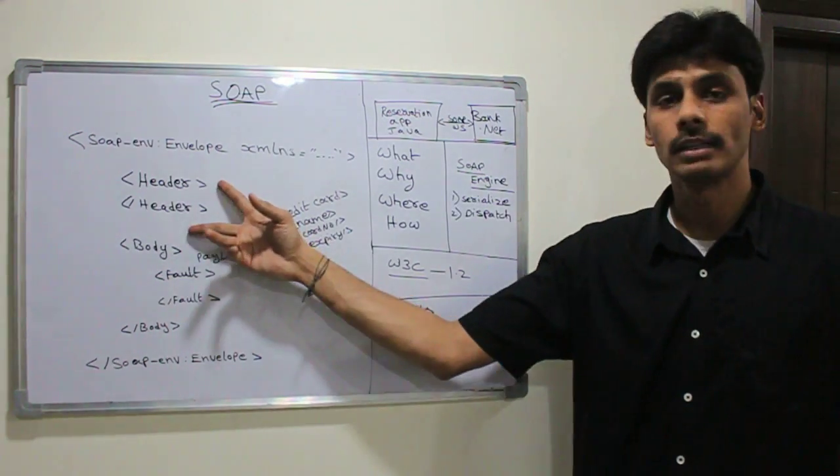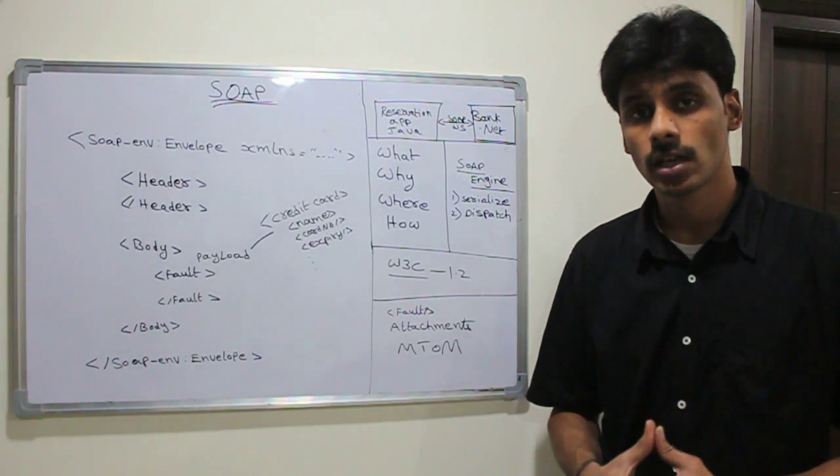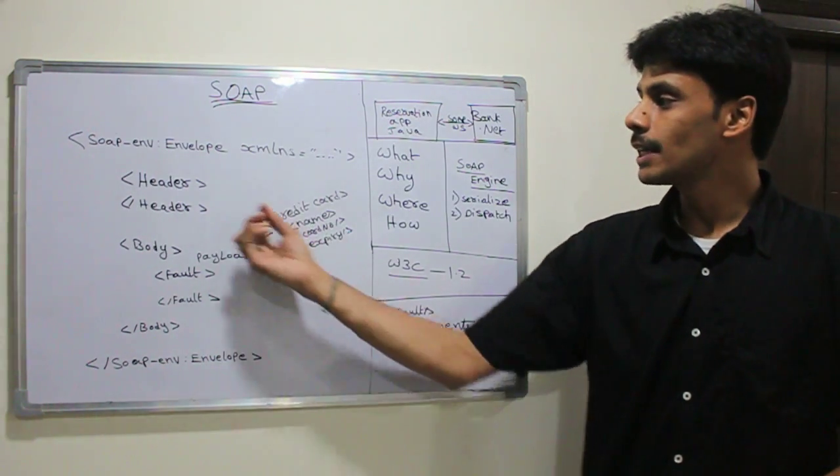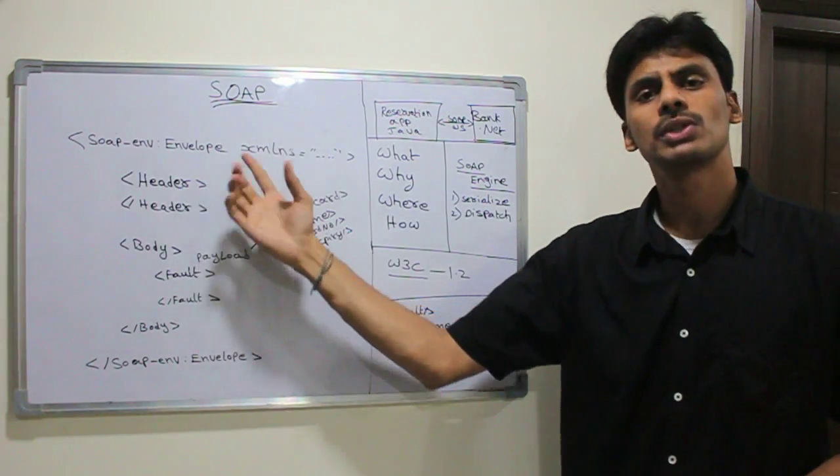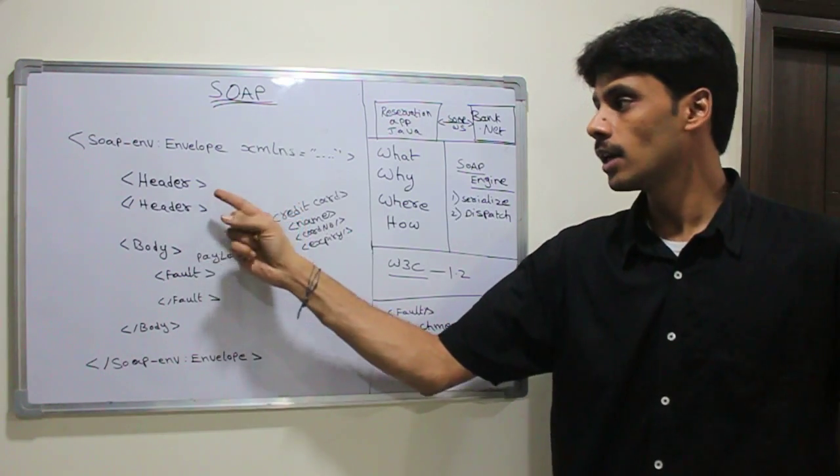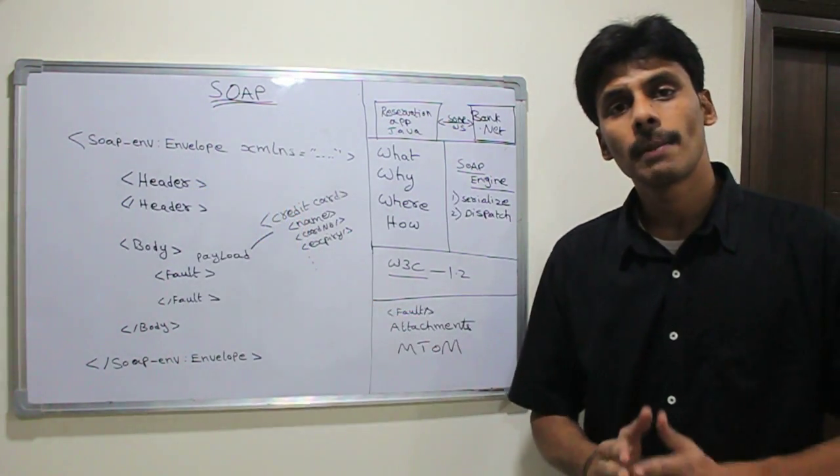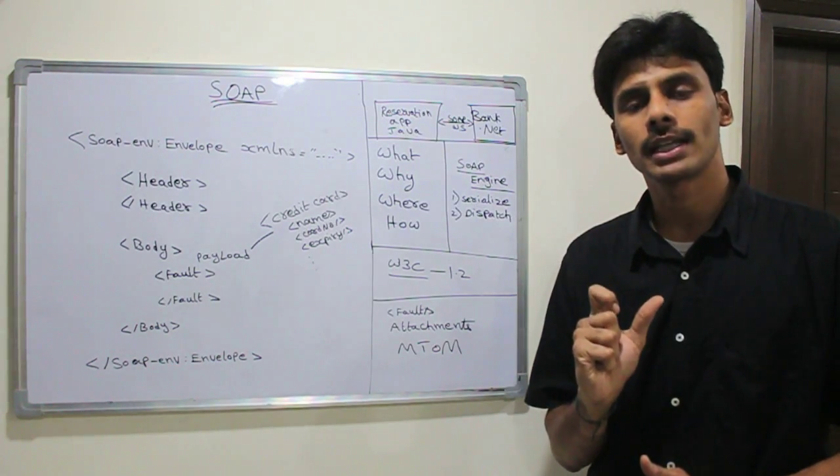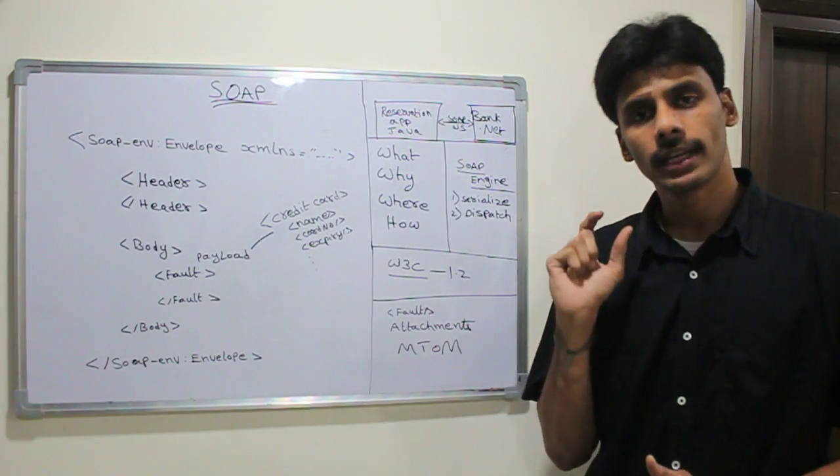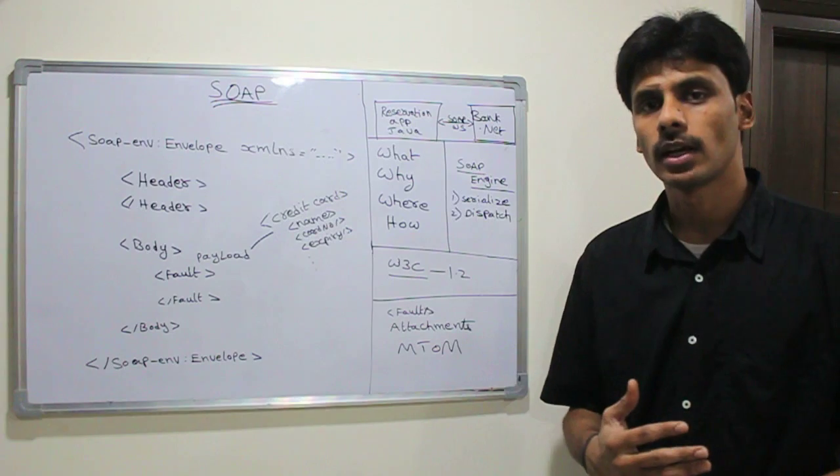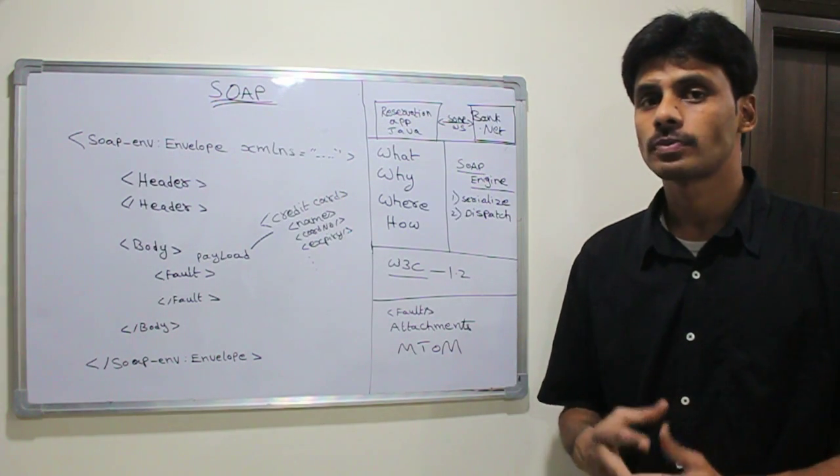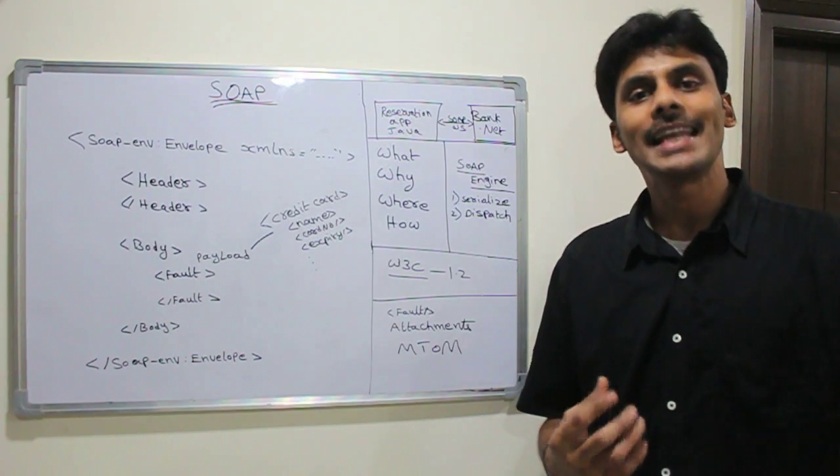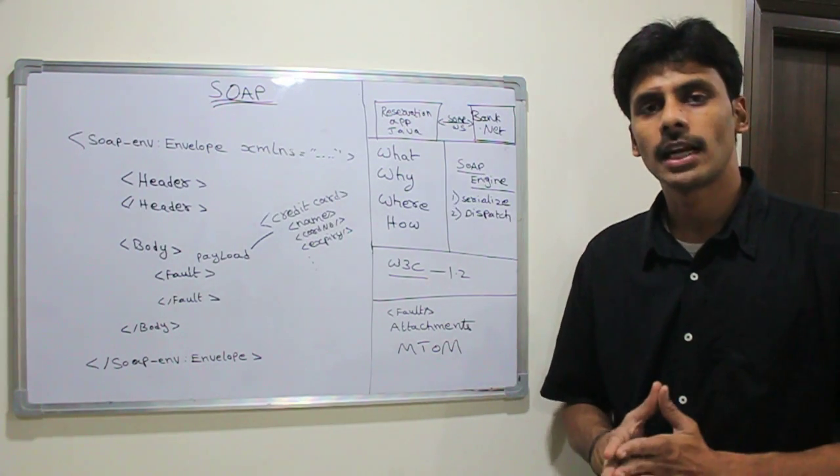But usually the header block is for the web services standards. For example, the web services security standard defines that if you want to authenticate, you can use username token to provide one way of authenticating, for which you can pass the username and password within the header block using a particular name for an XML element called username and then using password as another element. The advantage is any framework that follows this standard can communicate with any other web services framework in a standard manner.